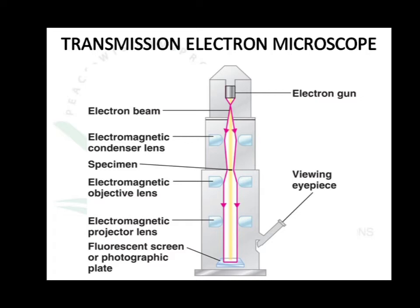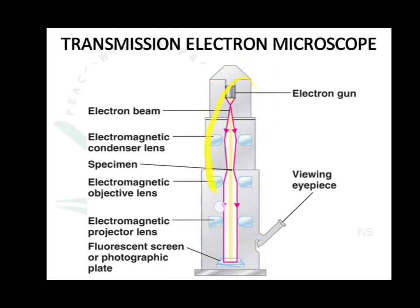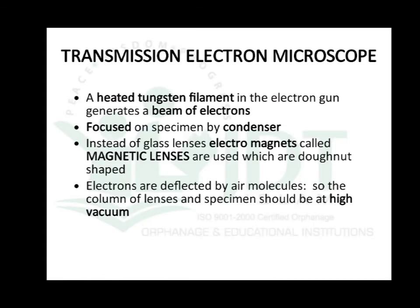We cannot observe the image directly with the naked eye because we are using an electron beam as the source. Also, the electron beam can be deflected in air, so all parts of the electron microscope must be maintained under high vacuum. In summary, we have a heated tungsten filament, condenser and electromagnetic lenses, all kept in high vacuum.